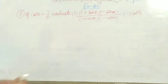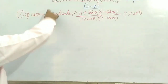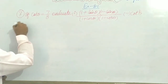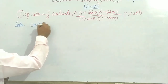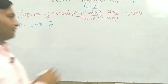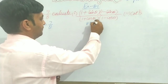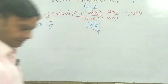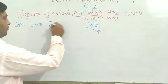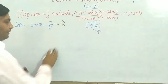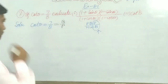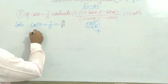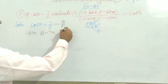Now let's see Question number 7. We have two parts and are given cos θ equals 7 over 8. We know that cos corresponds to base over hypotenuse. Taking a constant K, we can put base B equals 7K and hypotenuse P equals 8K.